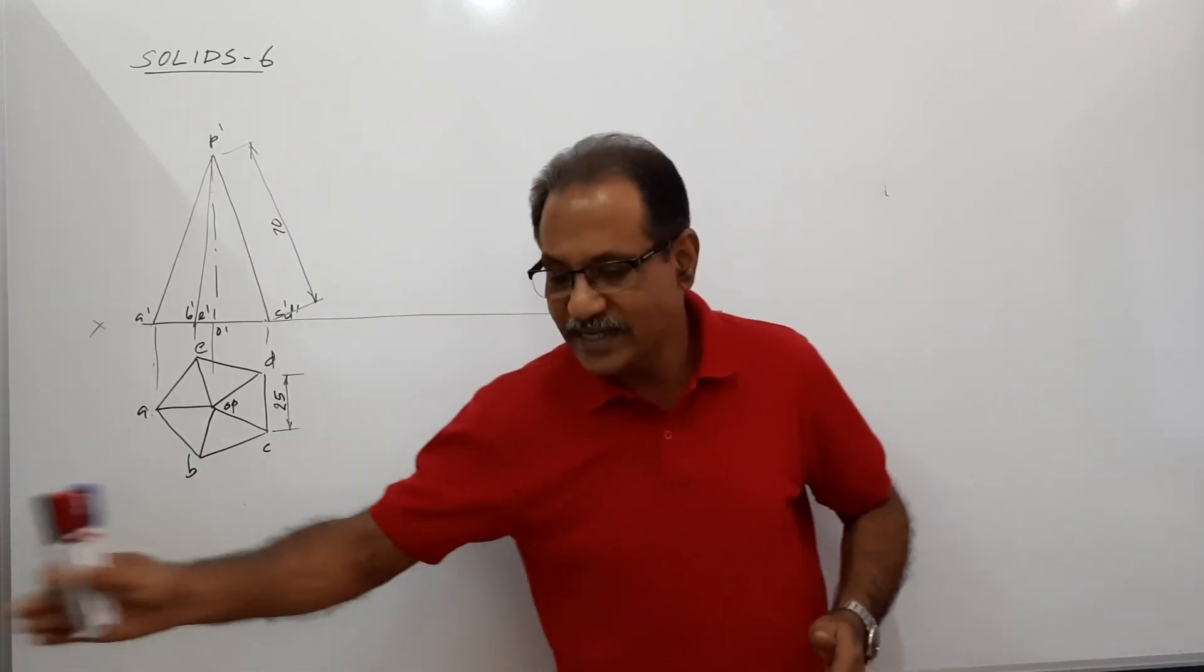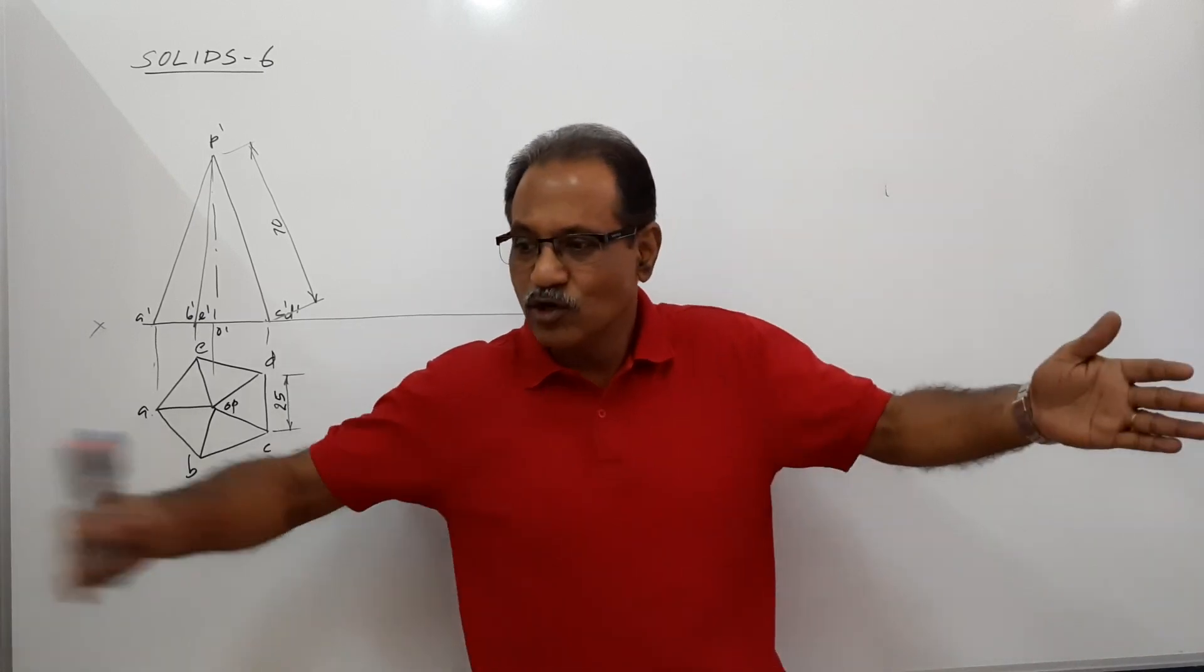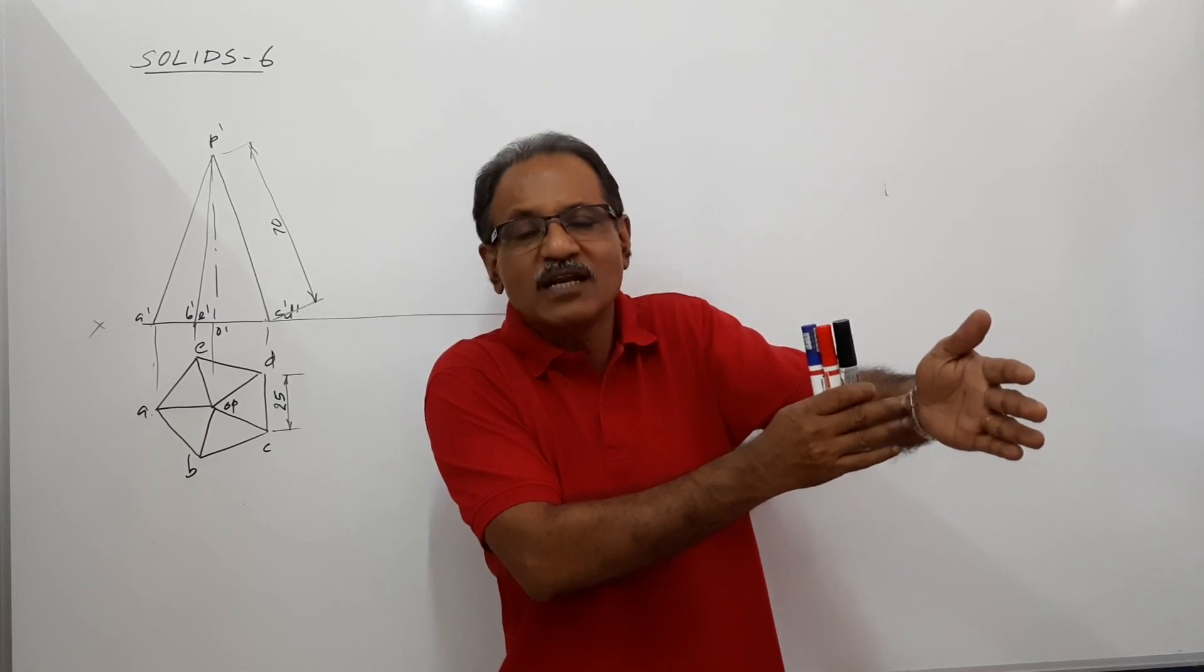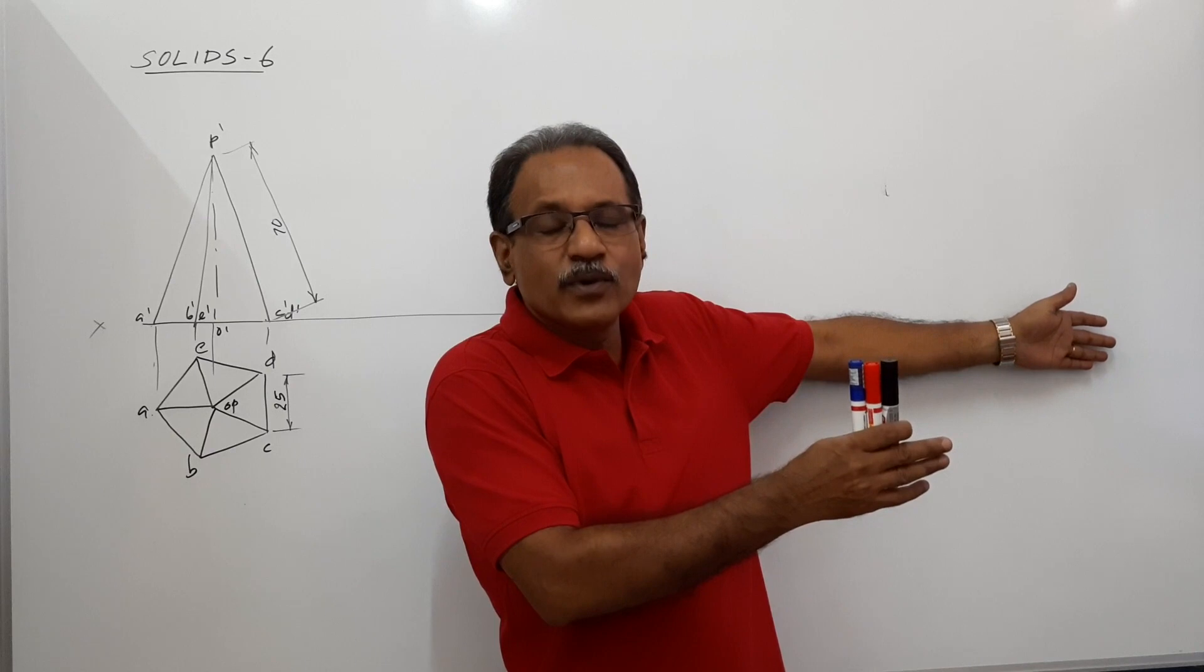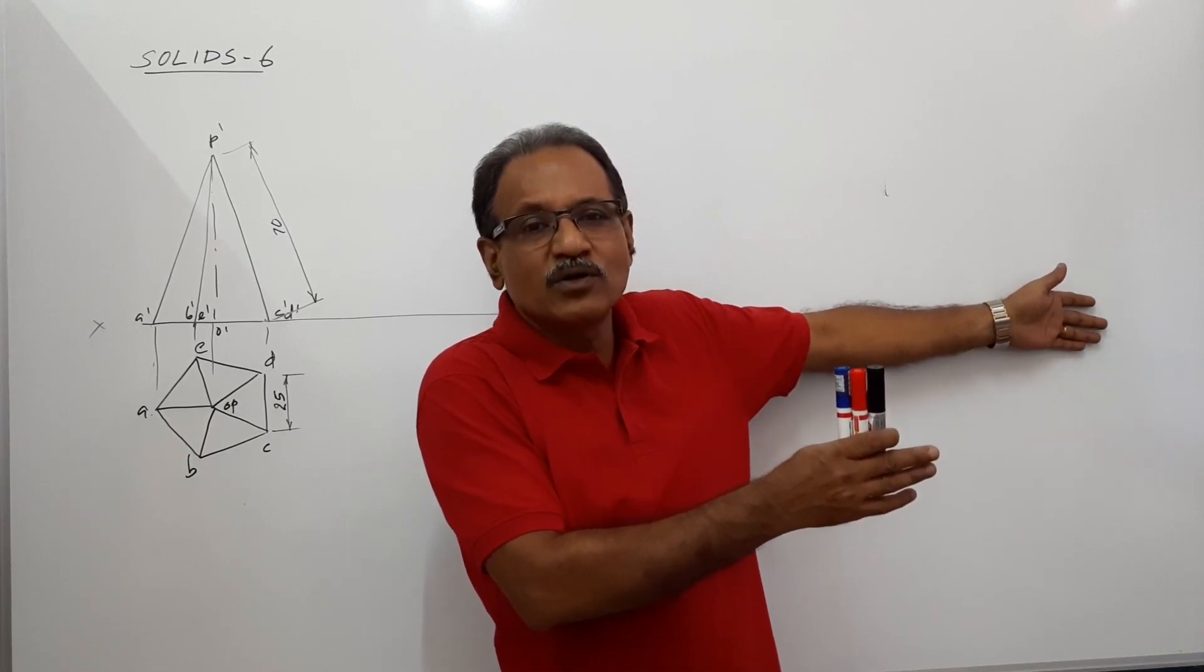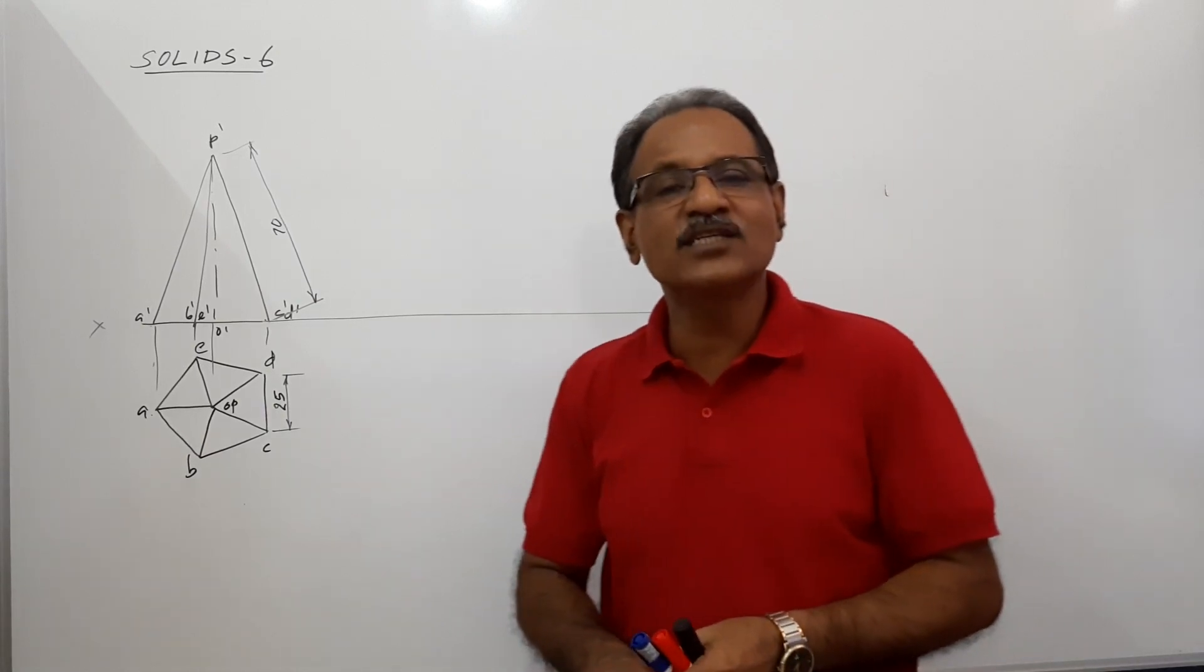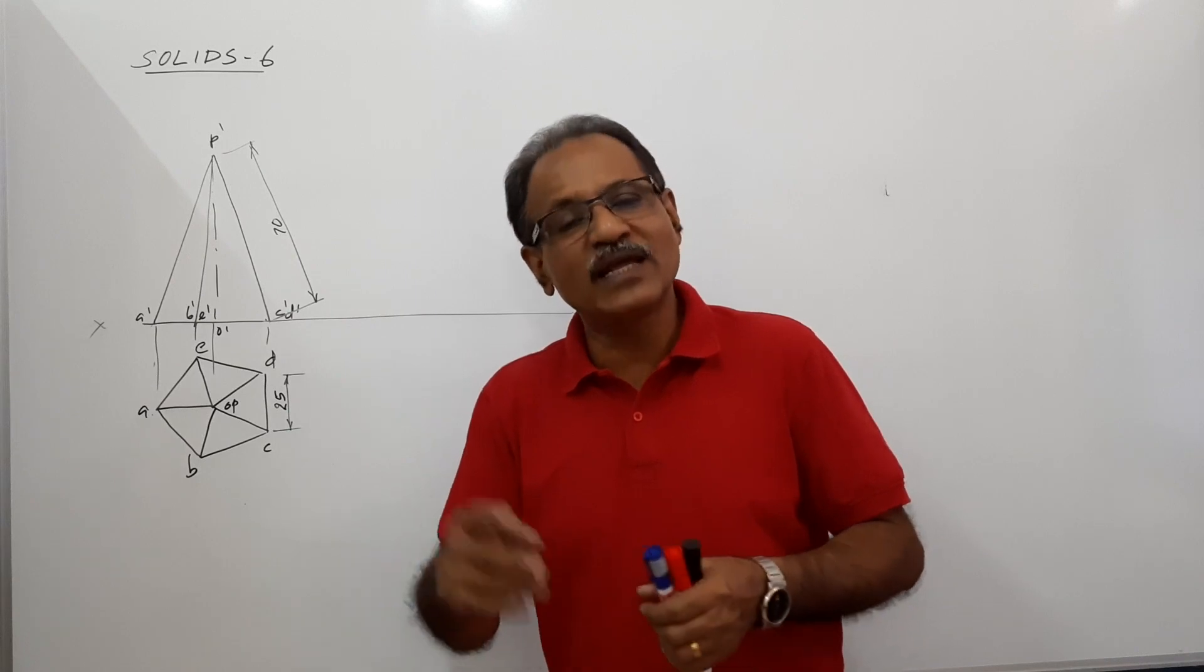You can look from this side also if you take a profile plane here. This is the object, this is the profile plane. You look from this side, draw onto the profile plane a view. And rotate the profile plane and keep it coinciding with the VP. Then, on the right side of the elevation, you will have a view that is called the left side view.